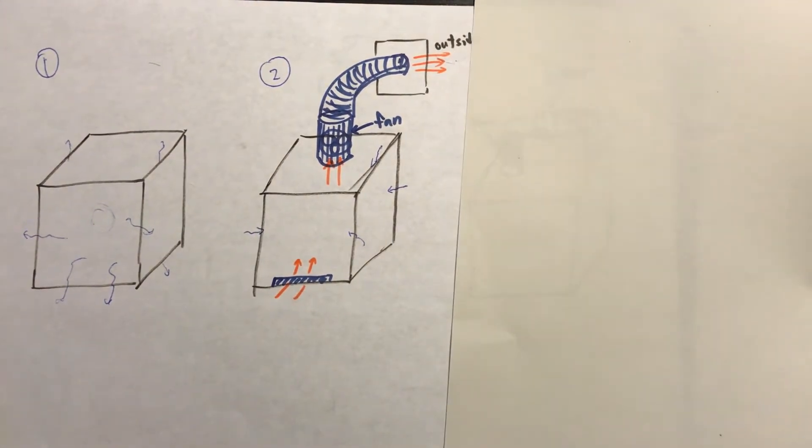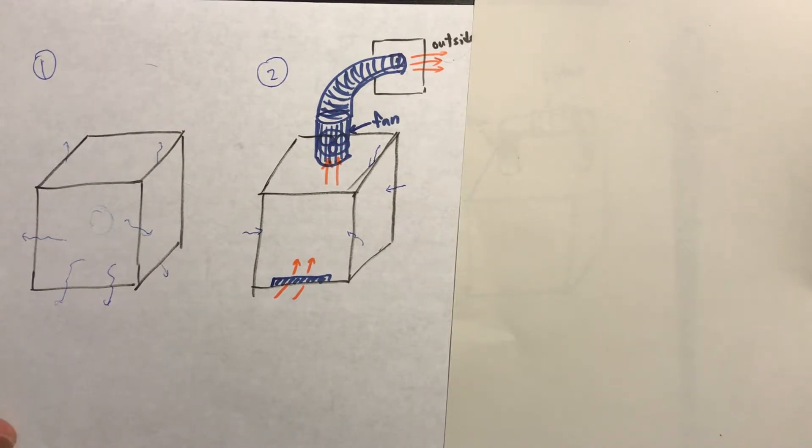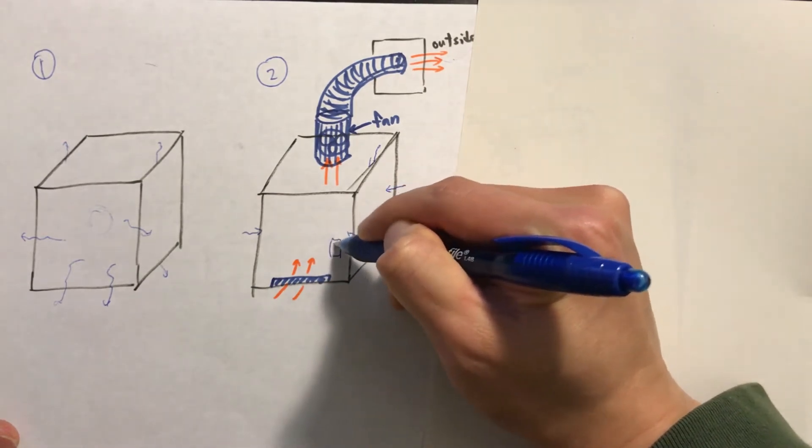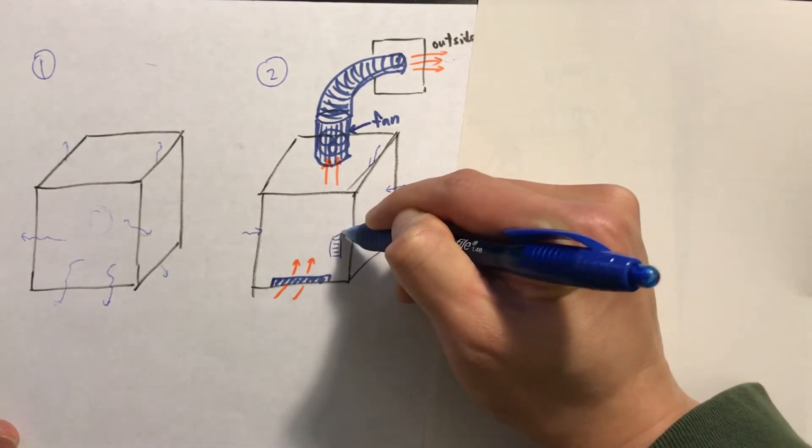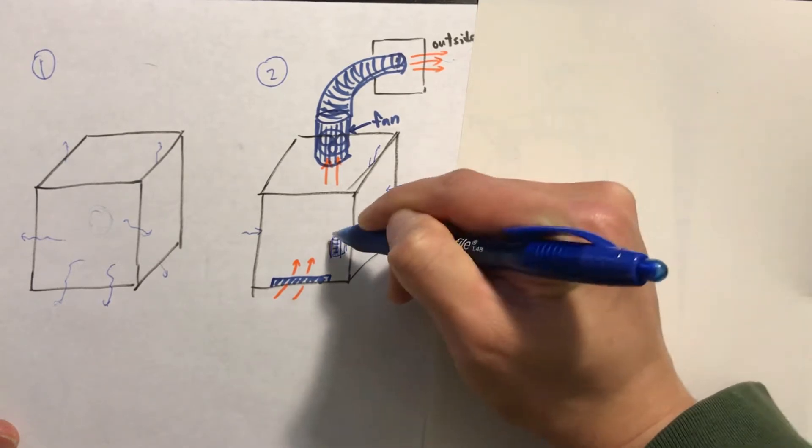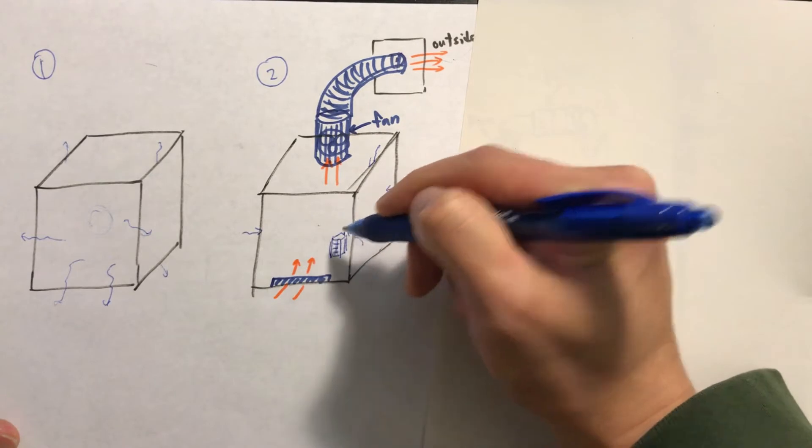The disadvantage of this design is because the heated air inside the enclosure is actively ventilated out by a fan, it might be more challenging to keep the air temperature high than the first design. One idea to compensate this is we can probably put a small heater with a thermostat inside the enclosure to help out heating up the air inside.